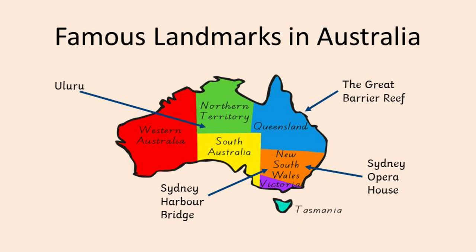You have Western Australia in red, the Northern Territory in green, South Australia in yellow, Queensland, then New South Wales where Sydney is located, Victoria underneath in purple, and then the island off the bottom is Tasmania.